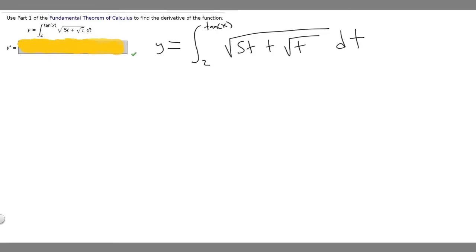In this problem, we're told to use Part 1 of the Fundamental Theorem of Calculus to find the derivative of the function. We're told that y equals the integral from 2 to tan(x) of the square root of 5t plus the square root of t, dt.